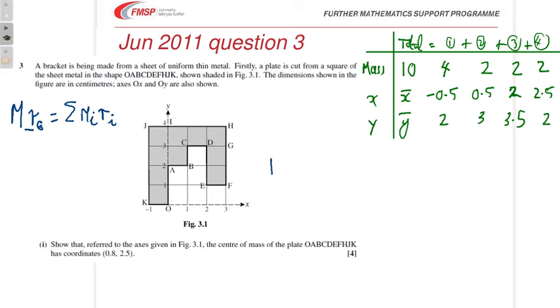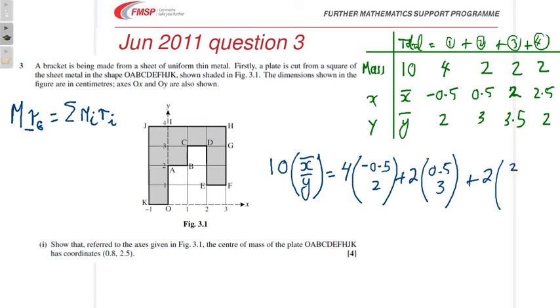So, this is what we'll get. 10 times x-bar, y-bar is equal to 4 times -0.5, 2 plus 2 times 0.5, 3, 2 times 2, 3.5, just running out of room there, I'll have to put that down here plus 2 times 2.5, 2.